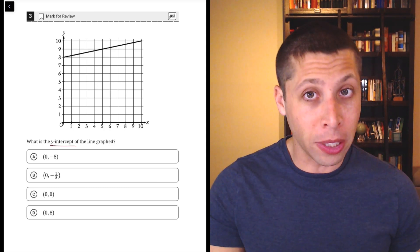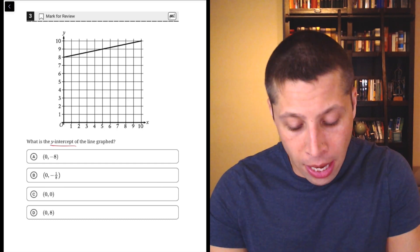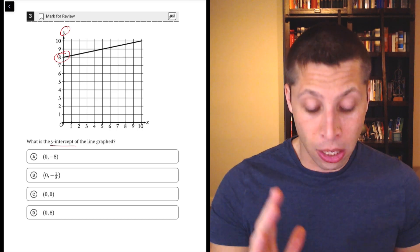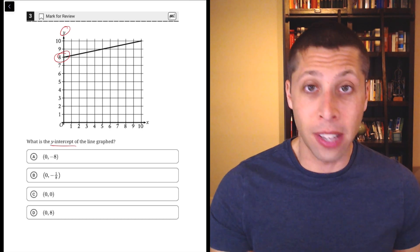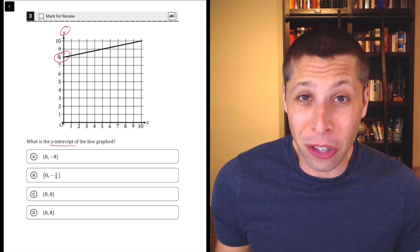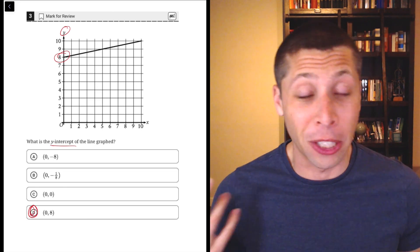You might visually know that the y-intercept is where a line or graph intersects the y-axis, right? That's the vertical axis. So in this case, it's literally just where does this line hit that y-axis? It's at the point eight. And just based on the choices, you can tell that only one even makes sense. Choice D is the only one that even includes the number eight.